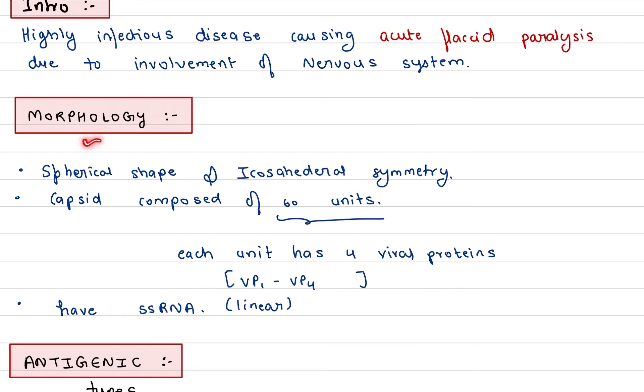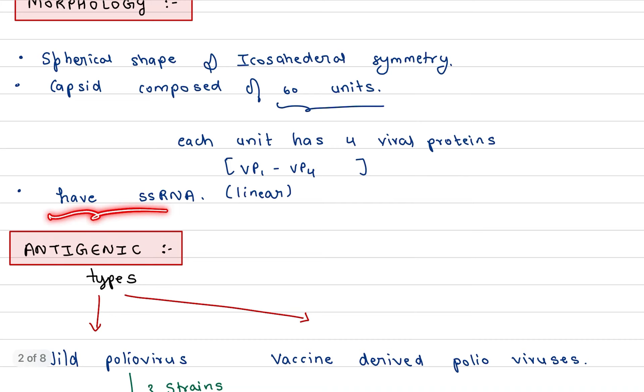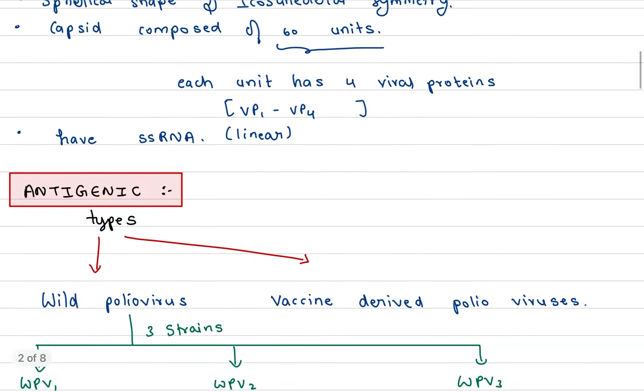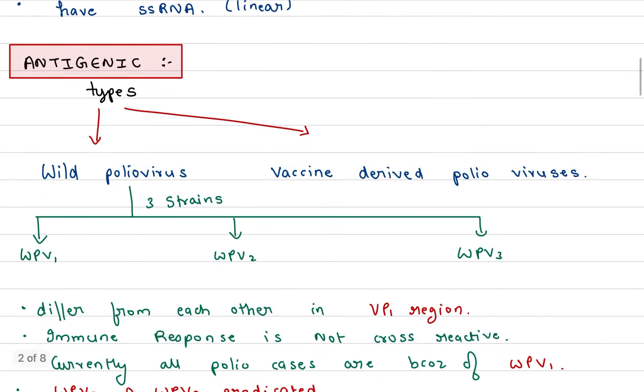There are two types of paralysis, mainly the flaccid and the spastic. Here we are watching flaccid. Morphology: spherical in shape and icosahedral symmetry, which is linear.